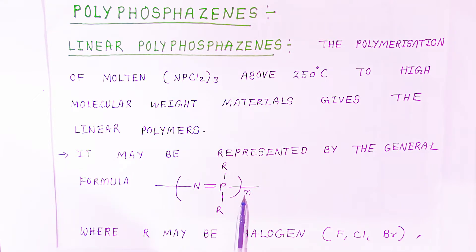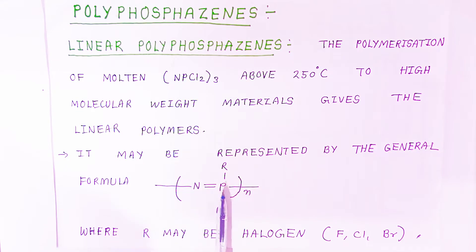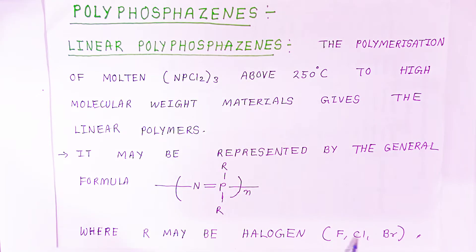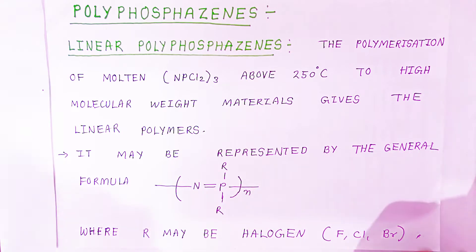So this is the linear polyphosphorgens, where R may be the halogens. You can represent the alkyl group by fluoride, chloride, and bromide. It may be halogens.